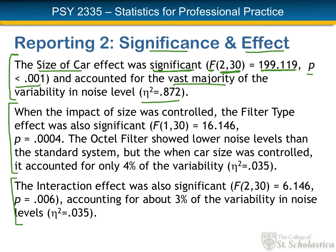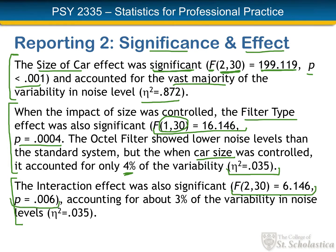For the second test, with the impact of size controlled, filter type was also significant. I reported the F-results with degrees of freedom in parentheses and the calculated statistic, writing p = 0.004. I noted that the Octel filter showed lower noise levels than the standard system, but with car size controlled it accounted for only about 4% of the variability, and I included the eta squared for the effect size. The third reported result is the interaction effect — the same F-test format with the actual p-value — accounting for about 3% of the variability, with eta squared included.